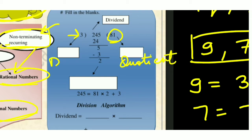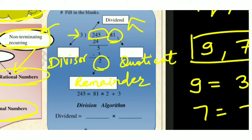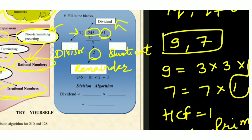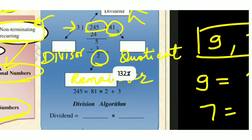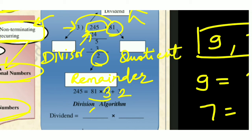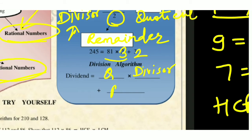The Division Algorithm states: Dividend = (Quotient × Divisor) + Remainder. So for 245 ÷ 3: 245 = (81 × 3) + 2. This formula is the Division Algorithm.